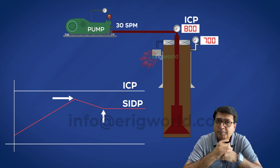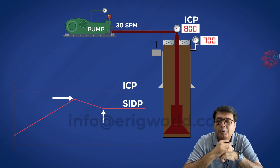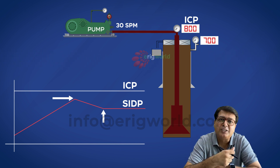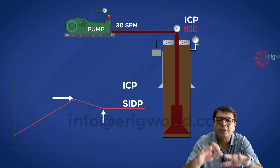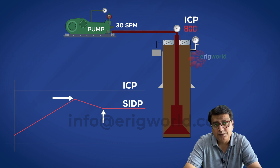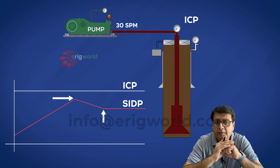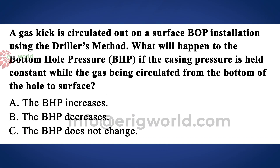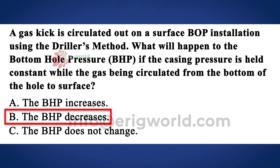So what will happen to BHP? BHP will decrease because you are unnecessarily opening the choke. If you open the choke, all the pressures in the wellbore will decrease. So the answer for this question is BHP will decrease because I'm opening the choke and not following the principle. The answer is BHP will decrease.